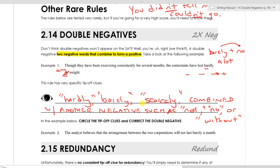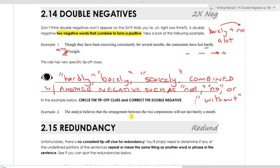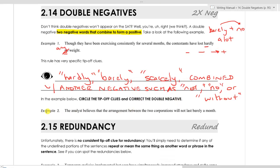So again, if we see hardly, barely, or scarcely, combined with another negative such as not, no, or without, we know there's most likely a double negative in front of us, and we are going to need to change something.